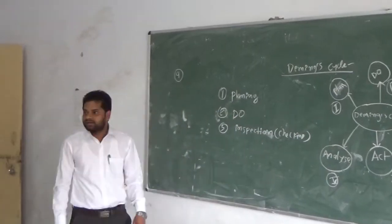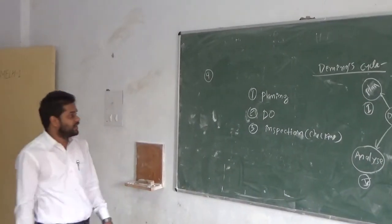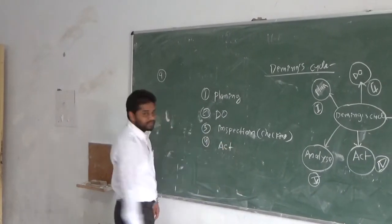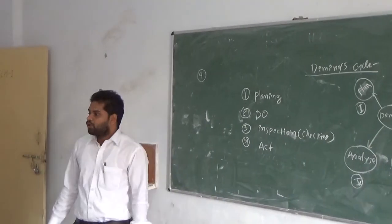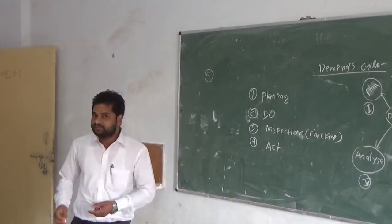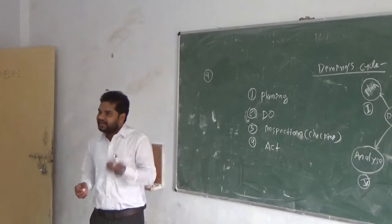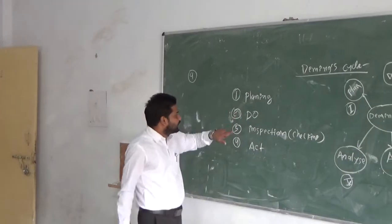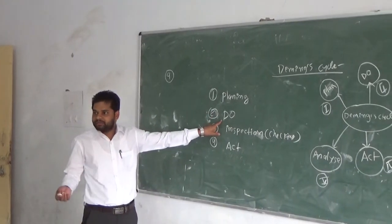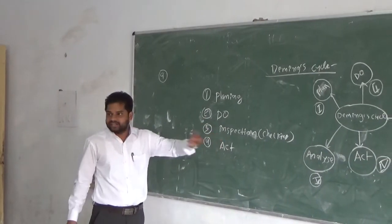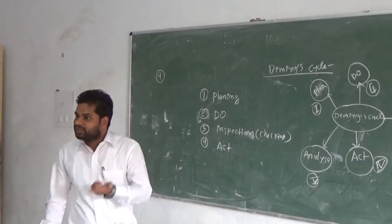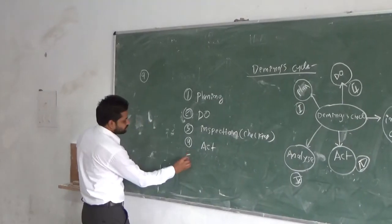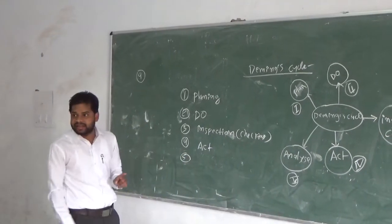Another one is the fourth point — this is the Act. So what do we mean by Act? Act is advertising — the marketing of the product. So go for the planning, then implement the program, and inspection or checking of the product for achieving the quality. And the fifth one is Analyze.